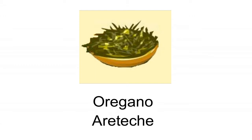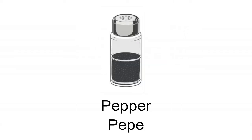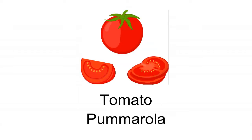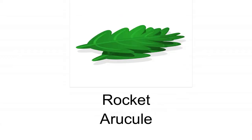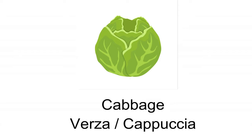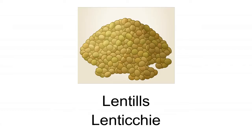Oregano — Origano. Potato — Patata. Pepper/Capsicum — Peperone. Peas — Piselli. Tomato — Pomodoro. Parsley — Petrusino. Rocket — Arugola. Celery — Sedano. Cabbage — Cavolo. Grape — Uva. Pumpkin — Zucca. Courgette — Zucchina. Lentils — Lenticchia.